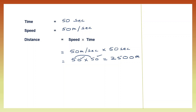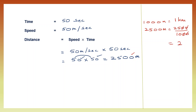Now we are going to convert 2,500 meters to kilometers. 1,000 meters make one kilometer, therefore 2,500 meters will be 2,500 divided by 1,000. Cancelling gives 25 divided by 10. When you divide by 10 the point moves one place to the left — so my number is 2.5. I have found the distance in kilometers to be 2.5 kilometers.